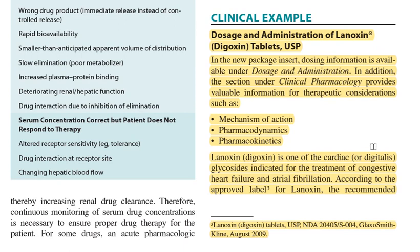Bismillah. This is our fourth lecture on clinical pharmacokinetics and therapeutic drug monitoring. Up till now we have covered many parameters pertaining to clinical pharmacokinetics, especially with reference to therapeutic drug monitoring. Now we focus on some clinical examples — two examples: one is digoxin, and the other is vancomycin antibiotic. The dosage and administration section and clinical pharmacology section of the package insert provide valuable information for therapeutic considerations such as mechanism of action, pharmacodynamics, and pharmacokinetics.